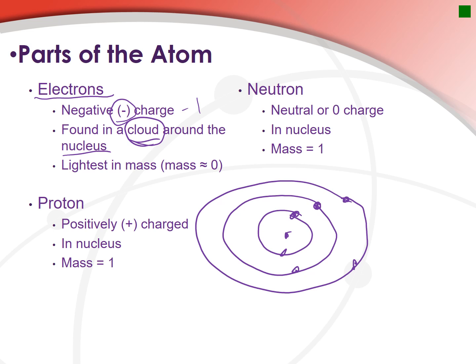The electron is extremely light in mass. Does it have mass? Yes, but you would need 1,800 electrons to equal the mass of one neutron or one proton. Therefore, we say it basically has no mass — it's negligible.